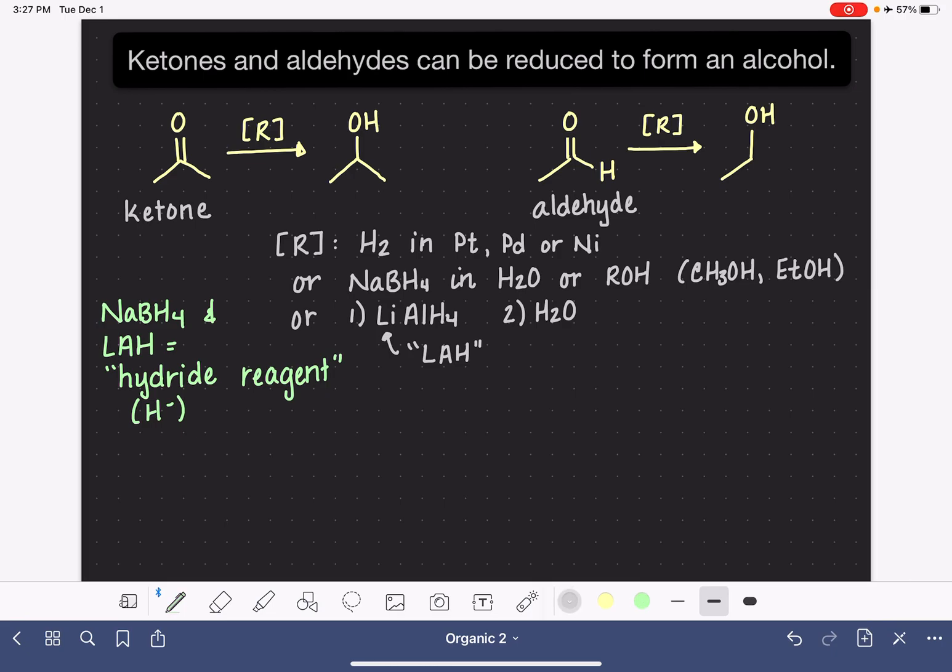So I'm going to draw a mechanism for that. And I'm just going to use, for this example, a simple ketone that is provided in this example right here. But we would be drawing the exact same mechanism if we were using an aldehyde instead. So the NaBH4 or the LAH, doesn't matter which one you're using, they're both hydride reagents, meaning that they are sources of H minus. And H minus is actually the reactive species in this particular reduction reaction.